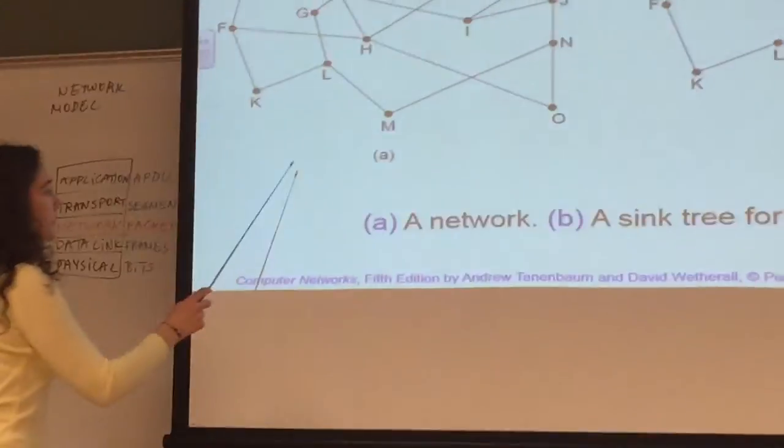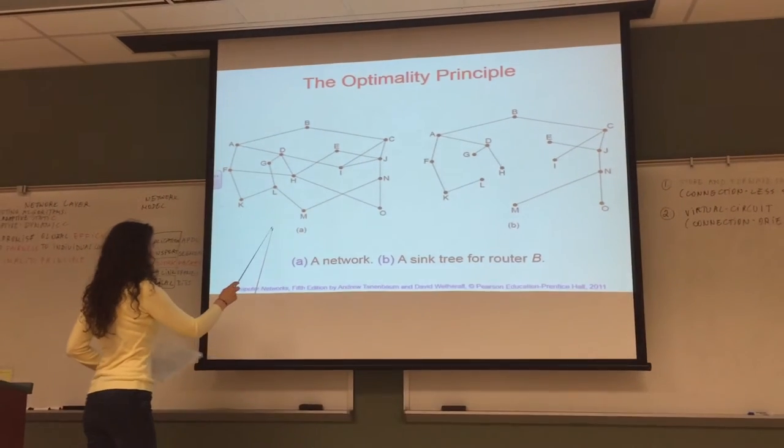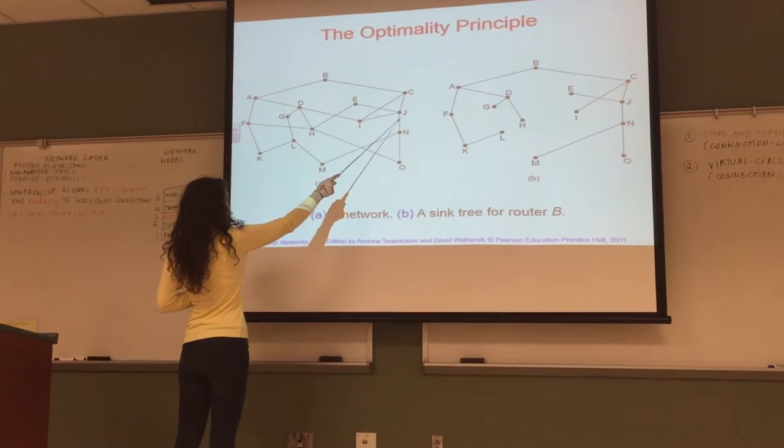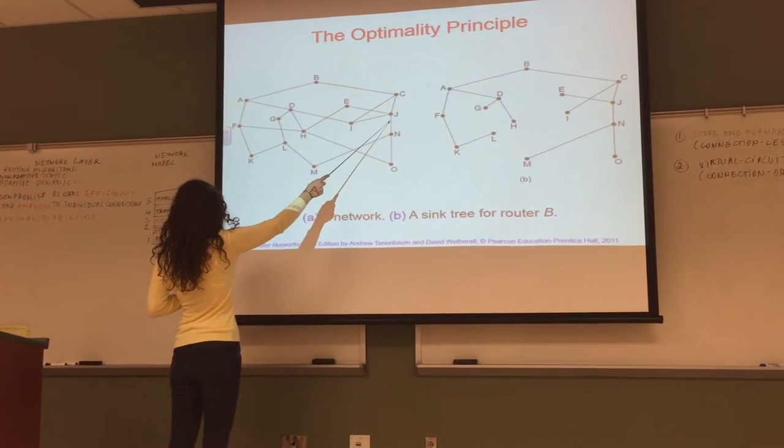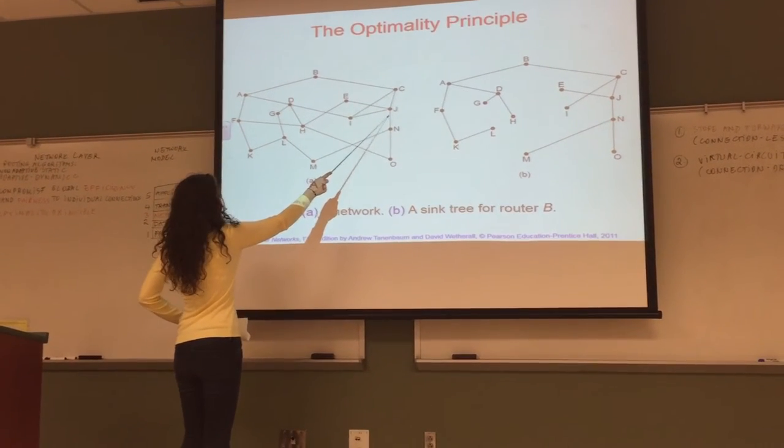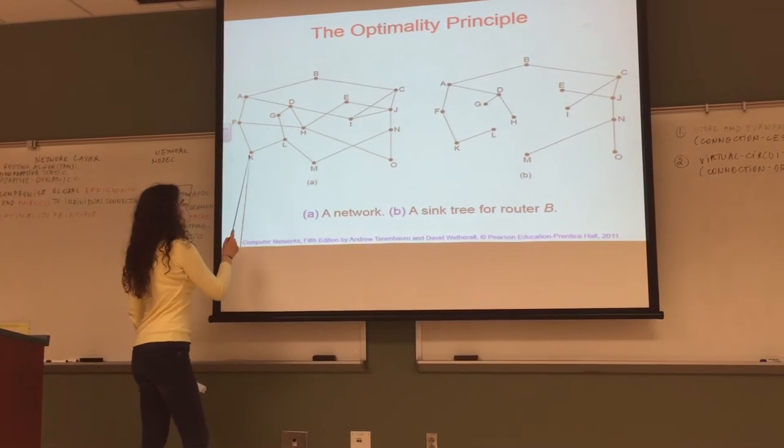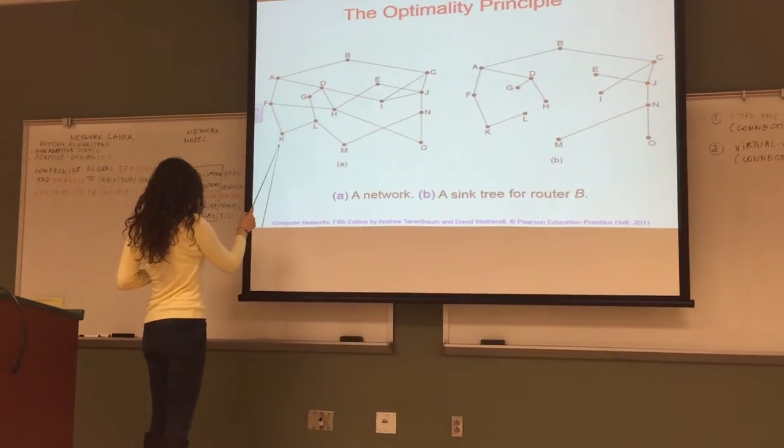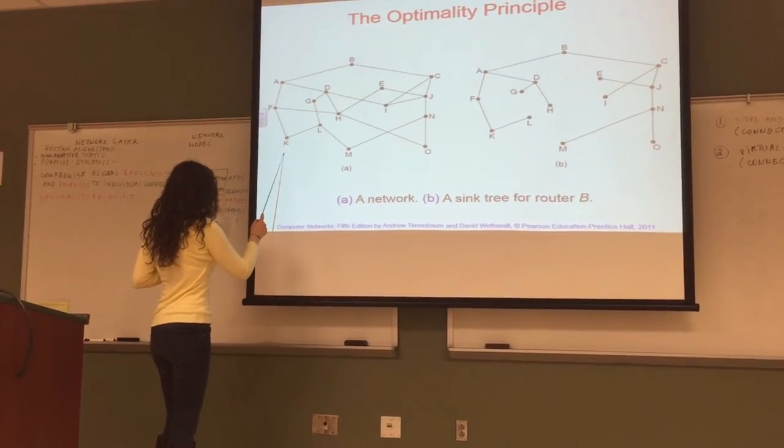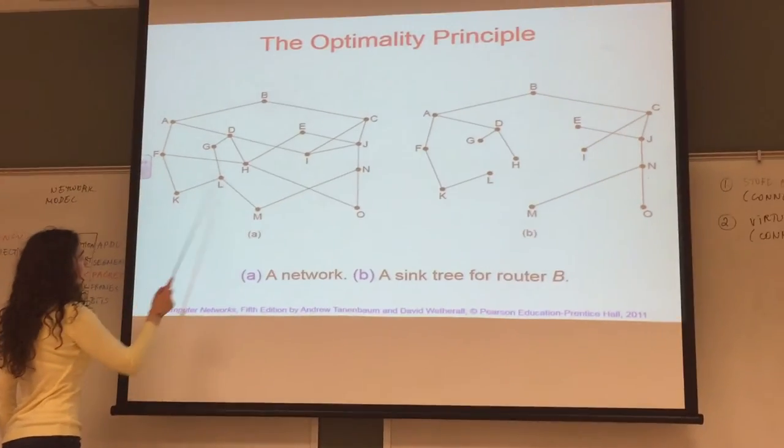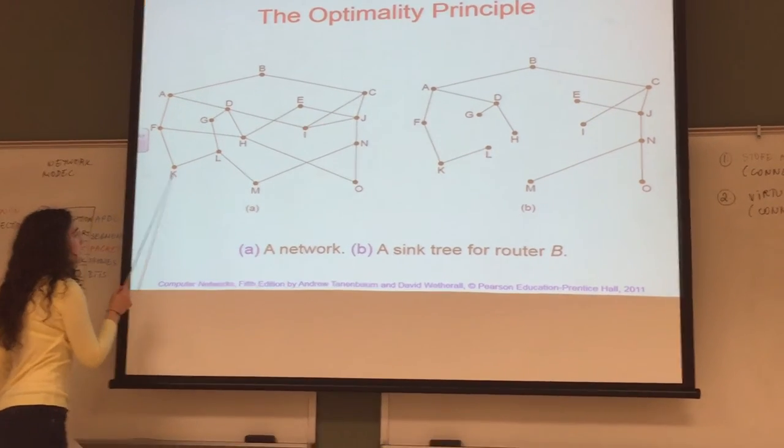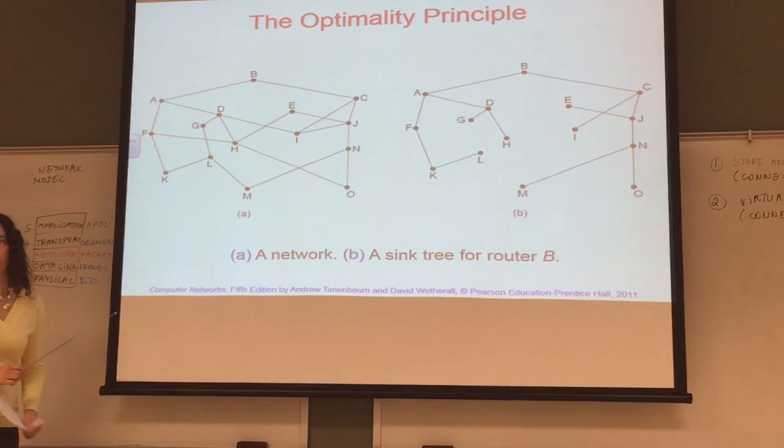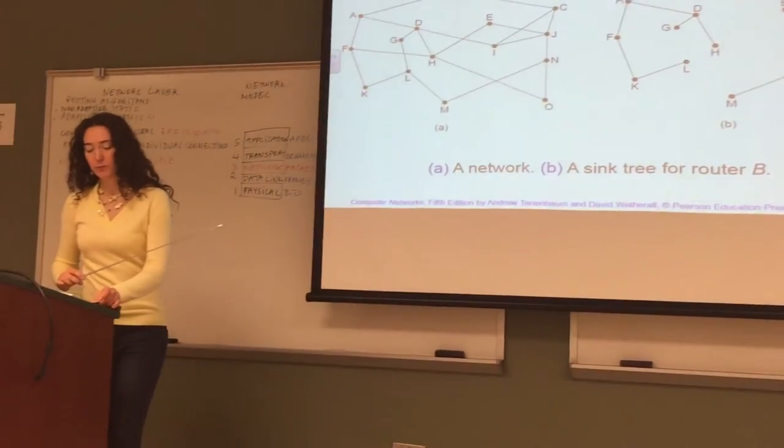Looking at the optimality principle: if this is the network, and if router J is on the optimal path from router I to router K, then the optimal path from J to K falls along the same route. That is the optimality principle.